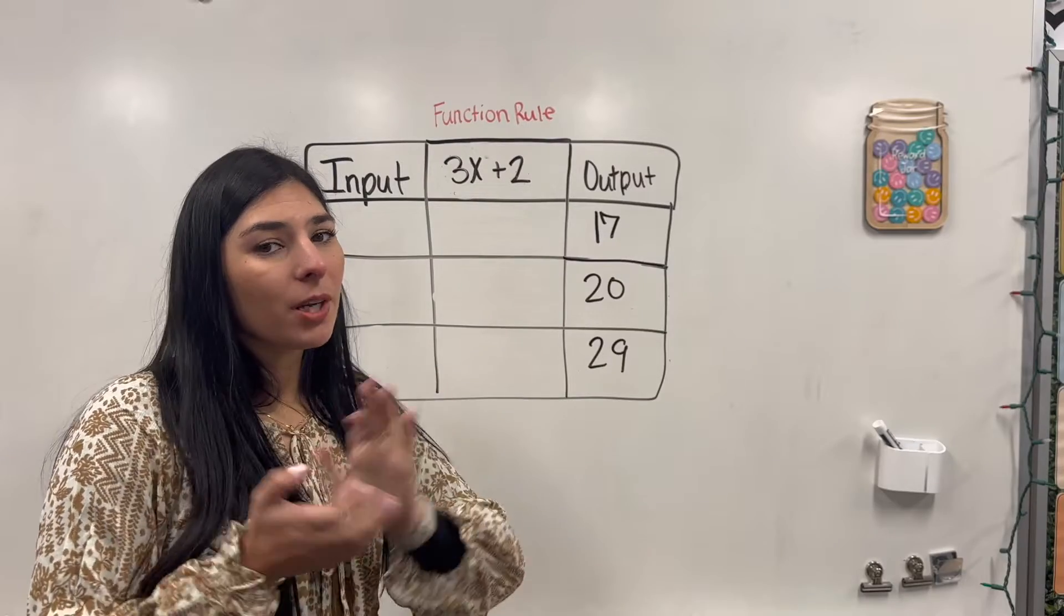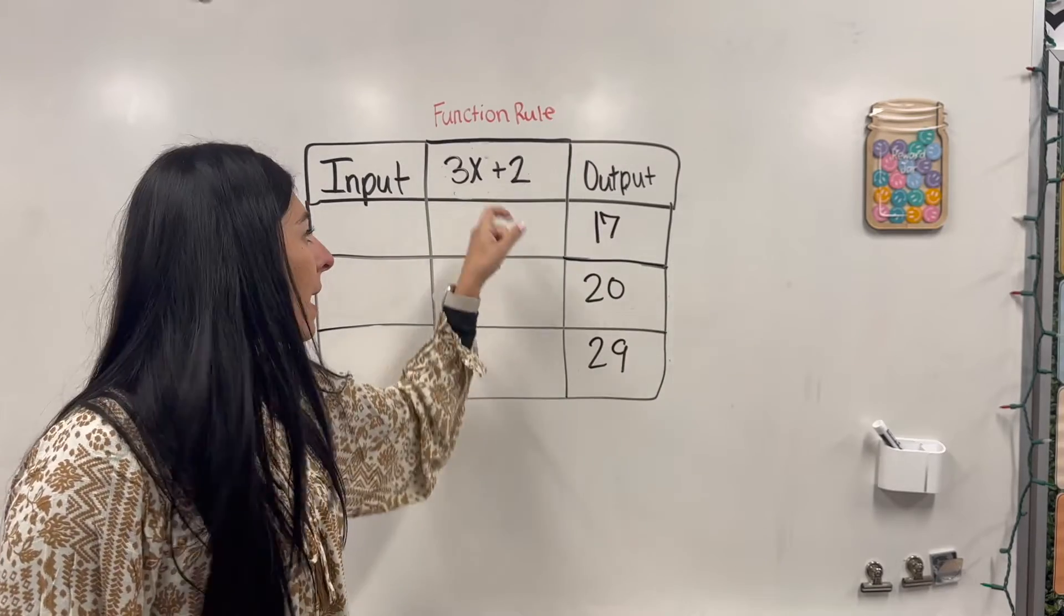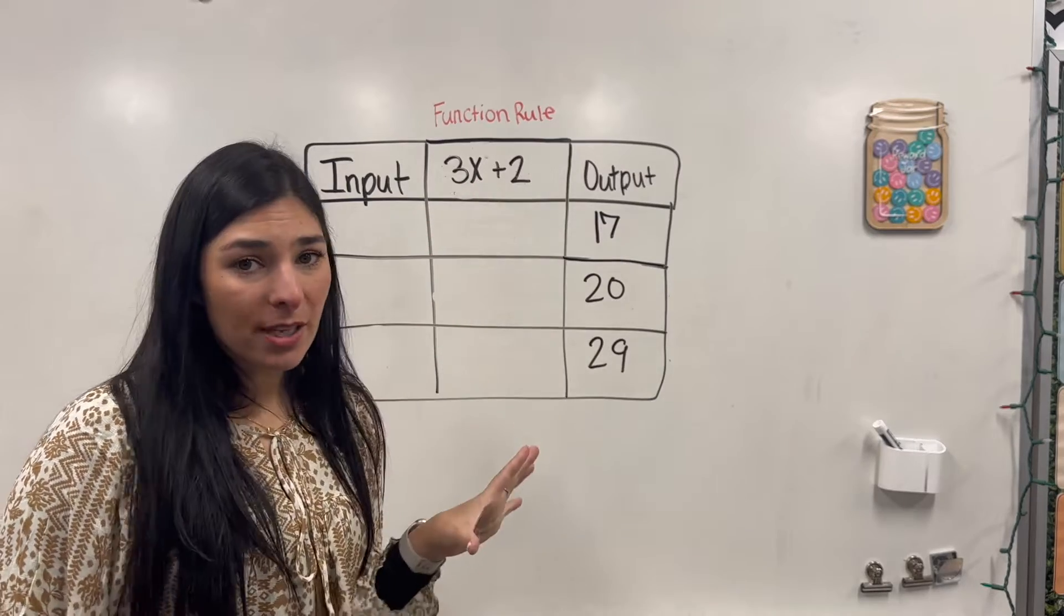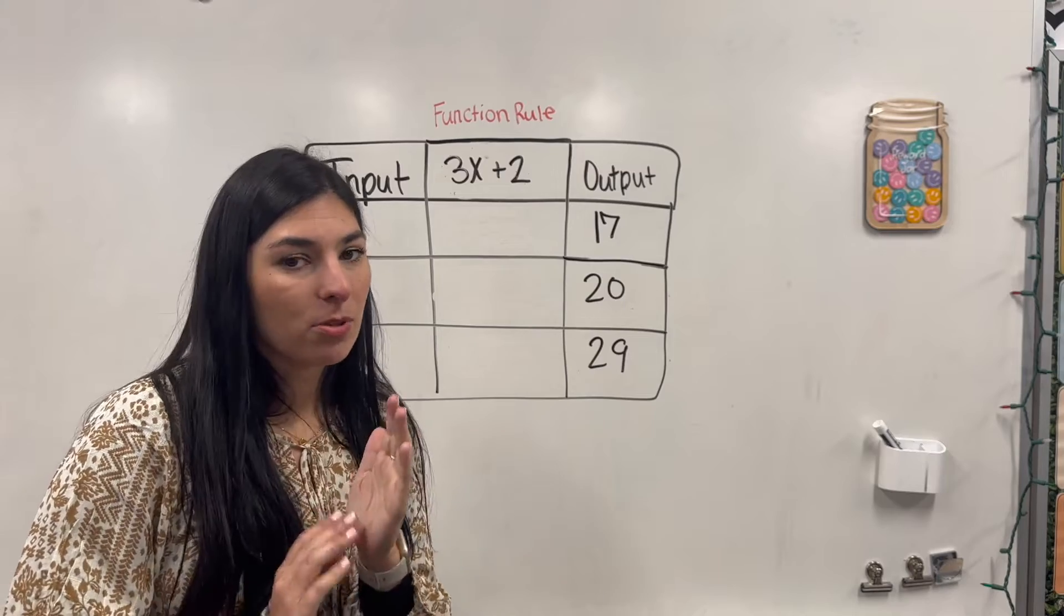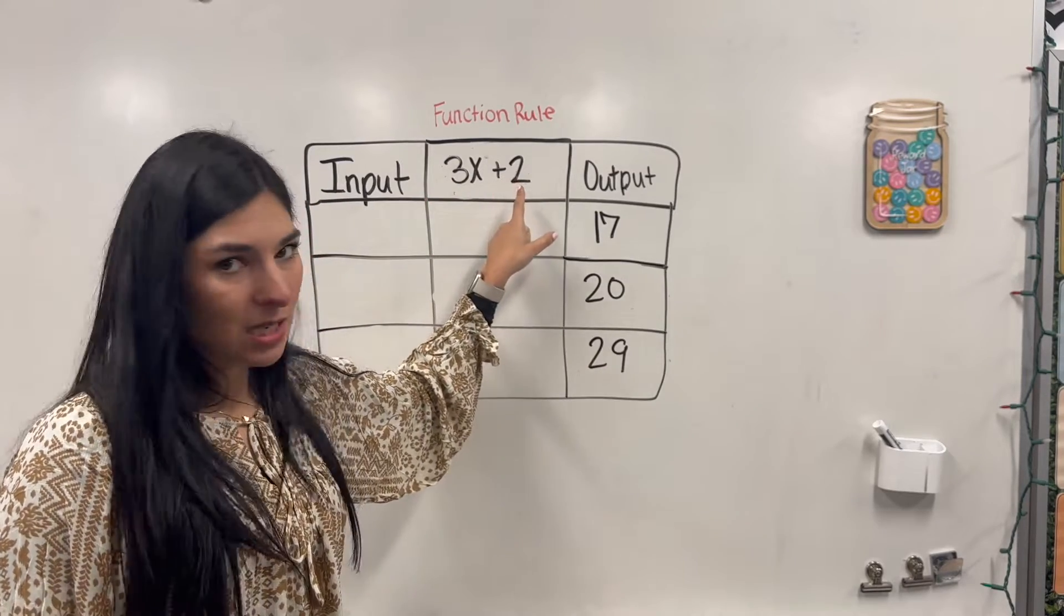Okay, so for this next one, it's a little more complex. Because we have our output, that means we're going to be working backwards to find our input. And our rule is a little bit more complex. I have 3x plus 2. So the first thing I want to do is find the number that is not connected with the variable. The variable is the letter. So 3 and x, those are connected. But this plus 2 is not connected.